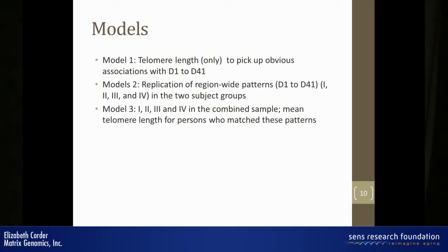I made three models. The first one initially used telomere length to pick up obvious associations with the genetic variables — any final predictive model would want to include those obvious associations. Then I wanted to make models using all 41 genetic variables to identify four patterns that represent the data — all of that variation you saw on those slides. And I want those patterns to be the same in the two subject groups. Third, I want to construct a final model in the combined sample and use the membership scores — the resemblance scores — to predict telomere length for persons who match these patterns.